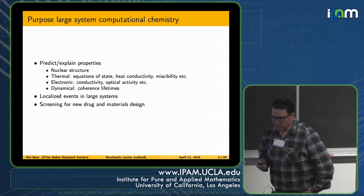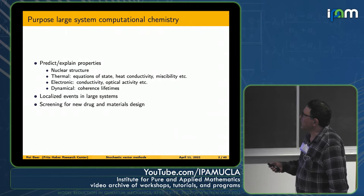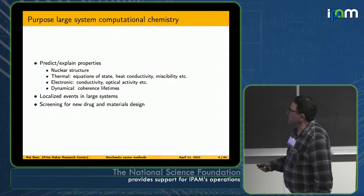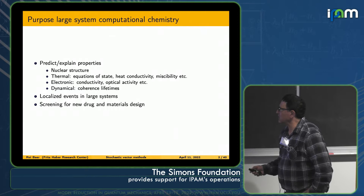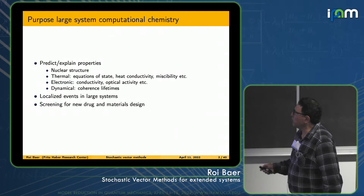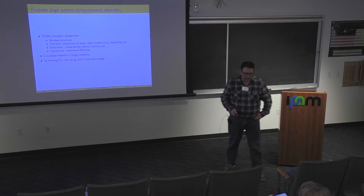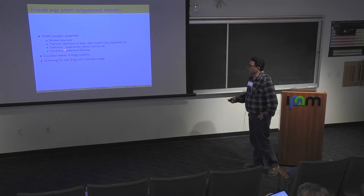Let me start with a bit of background and motivation. What we want to do in computational chemistry of large systems is to be able to predict or explain properties such as nuclear structure, thermal properties like equations of state, heat conductivity, miscibility, and also electronic properties like conductivity, optical absorption. Even coherence lifetimes is something we could aim for, though this is more complicated.